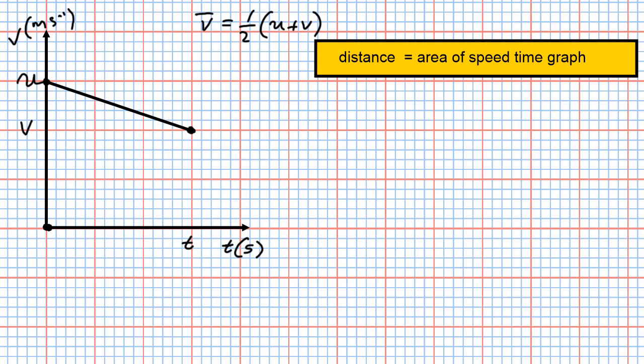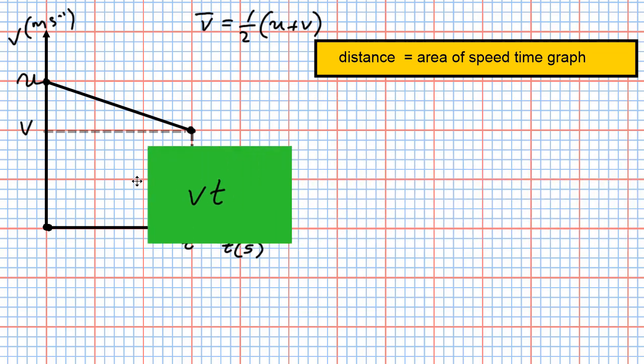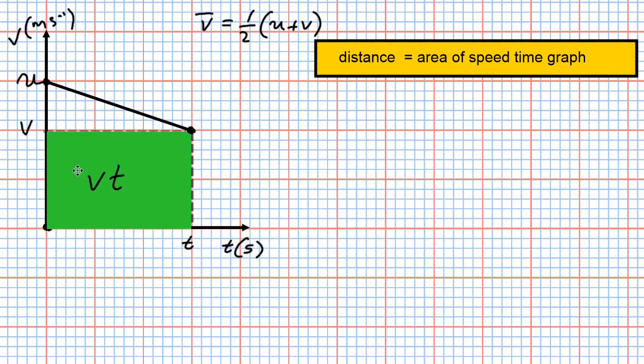The first job is to split that graph into recognizable shapes. Drawing a dashed line across at v gives us a triangle on the top and a rectangle on the bottom. The area of the rectangle is v times t. The triangle requires working out the height, which is u minus v, so the area of the triangle is one half of (u minus v) times t.